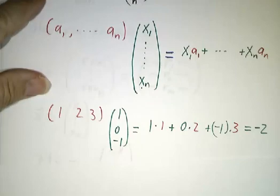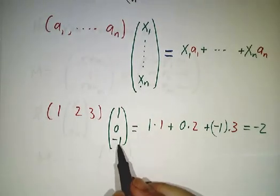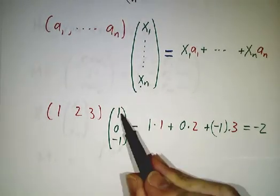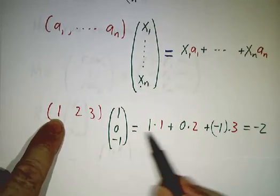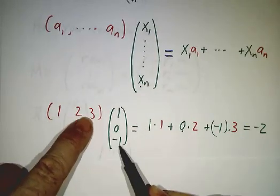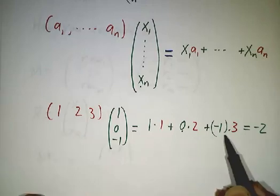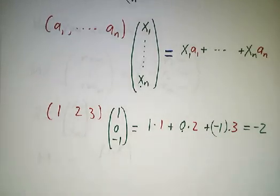So for example, if you wanted to multiply 1, 2, 3 by 1, 0, negative 1, you take this 1 times this 1, plus 0 times 2, plus negative 1 times 3, and you add them up and you get negative 2. Piece of cake.